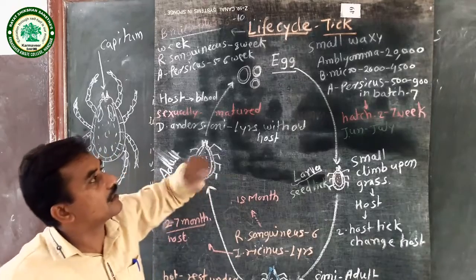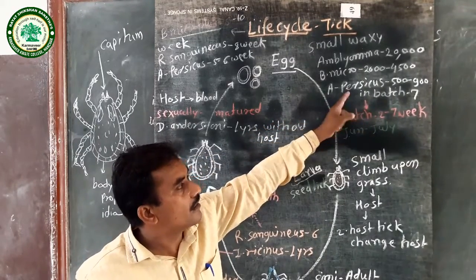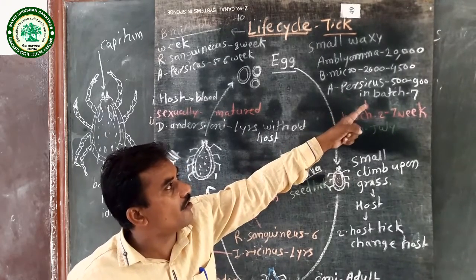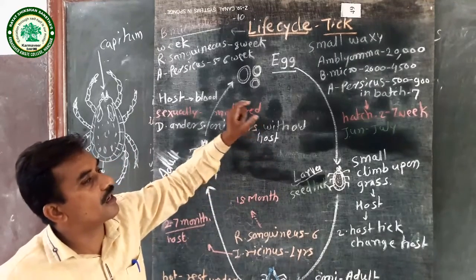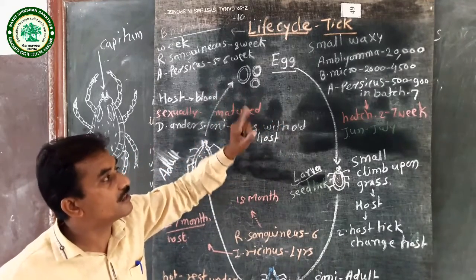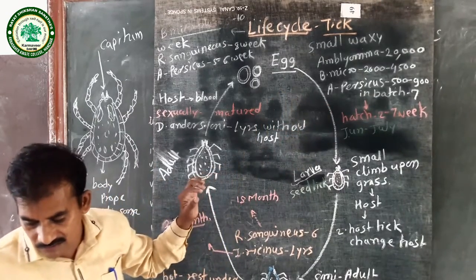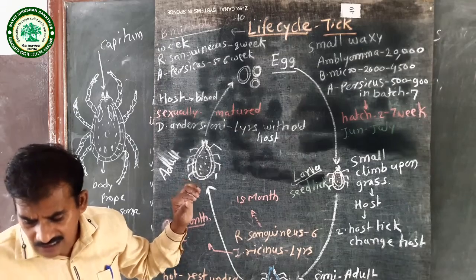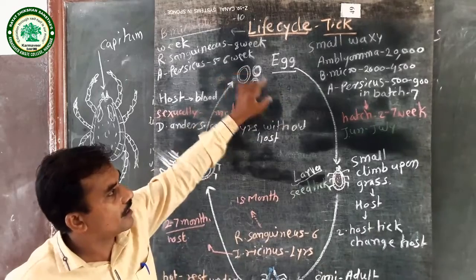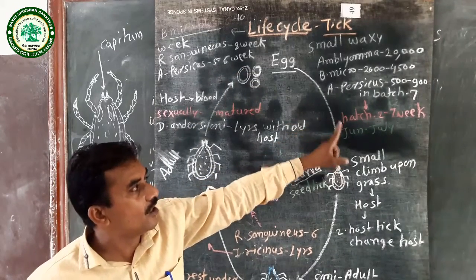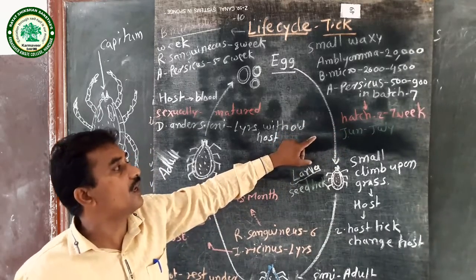In the species Argas persicus, eggs are released 500 to 900 in seven batches — approximately 100 to 120 eggs every four days over seven days, with each batch containing about 100 eggs. These eggs hatch in approximately two to seven weeks, and this period depends on temperature and humidity.